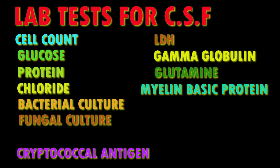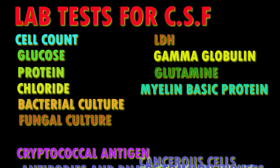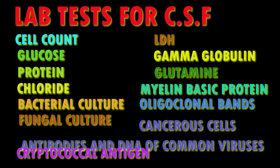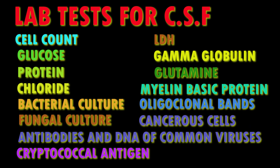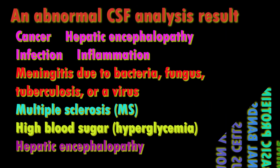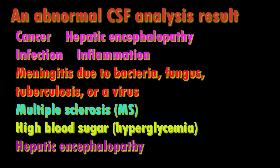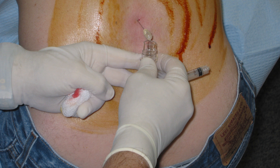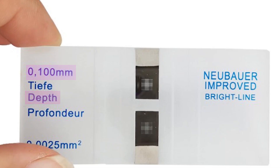CSF is a stat sample — processing should be started immediately, as the cells in the sample can degenerate, RBCs can lyse, and bacterial viability decreases when there is a delay in processing. Care should be taken to process the sample promptly, as the procedure cannot be repeated easily.